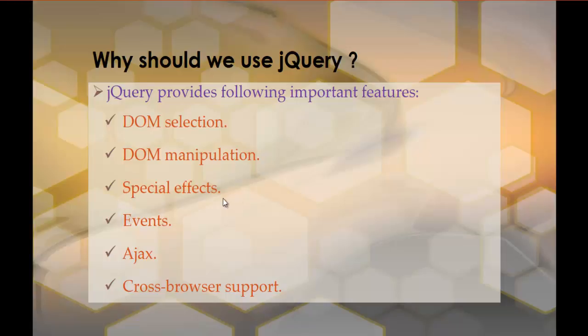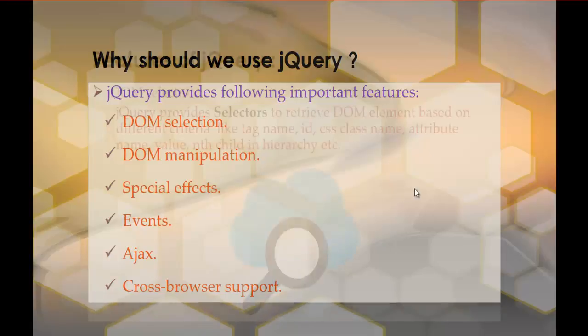Let me explain the features of jQuery. The first feature is DOM Selection, then DOM Manipulation, Special Effects, Events, Ajax, and Cross-Browser Support. These are the main and important features of jQuery. Let me explain them individually.